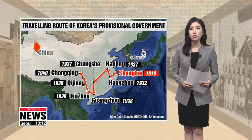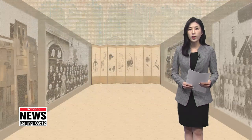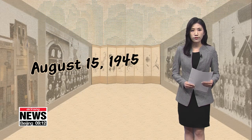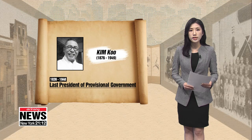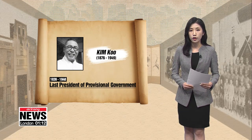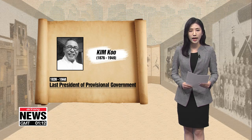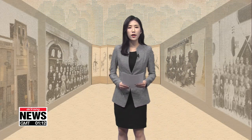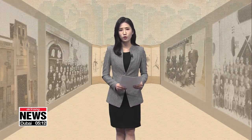The final destination was Chongqing, where it stayed until 1945. Following the surrender of Japan on August 15, 1945, figures such as Kim Gu returned home. Kim Gu was the last president of the provisional government, and he fought against the country's looming division until he was assassinated in 1949. The cabinet may not have continued, but the legacy of the provisional government still remains as part of South Korea's democracy.